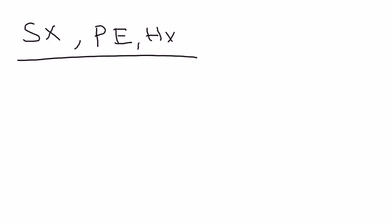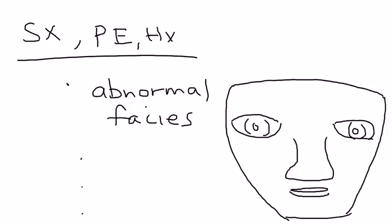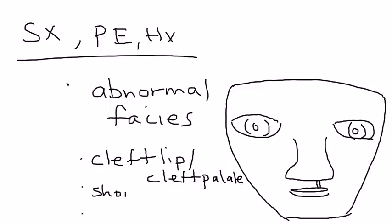Let's look at the symptoms and physical exam of a patient with DeGeorge syndrome. First is abnormal facies, referring to the facial structure of the child. The child can have a cleft lip or cleft palate, which is basically an opening in the lip or palate that needs to be surgically corrected. The next one is a shortened philtrum. The philtrum is this area right here, from the nose to the lip, and it will be very short.